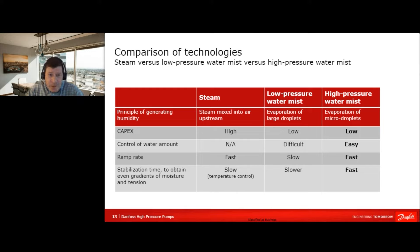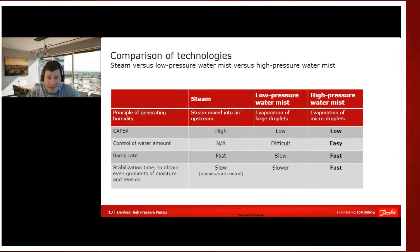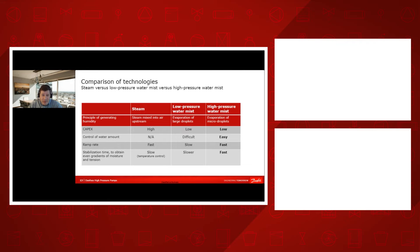Ramp rate is very fast with high pressure and also with steam. For low pressure, due to the large droplet size, it is slow. Stabilization time — meaning removing the tensions from the lumber — is very fast with high pressure systems compared to low pressure or steam, because you add only the needed amount of water and the process is fast; you can see the results immediately. For all these reasons, high pressure systems have proven very beneficial to end users.